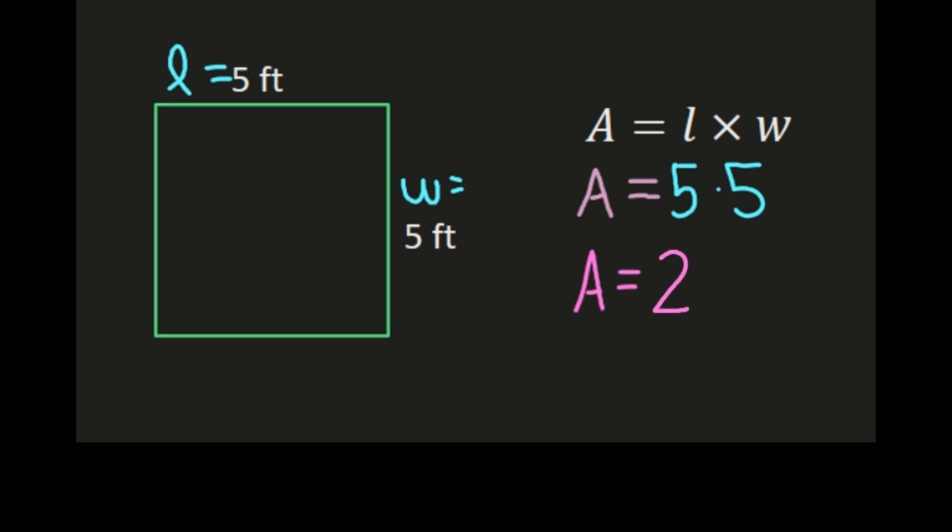So we have area equals 5 times 5. 5 times 5 is 25. And we're working in feet. So it's 25 feet squared.